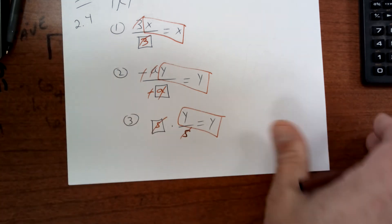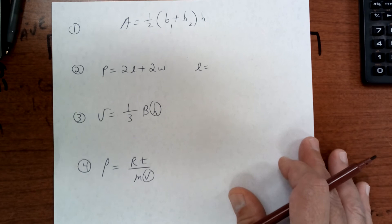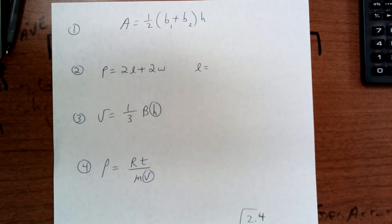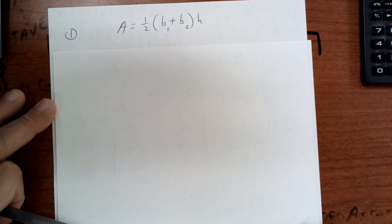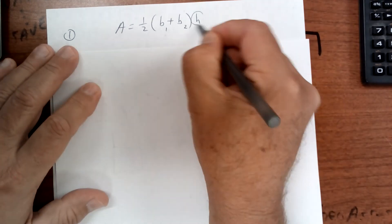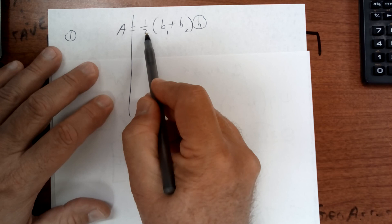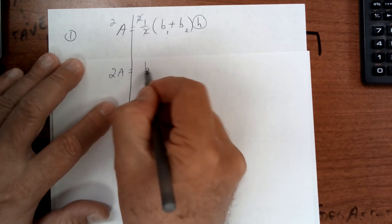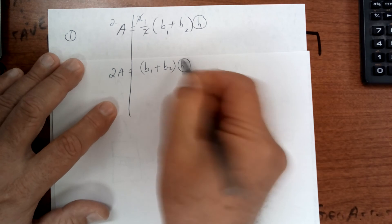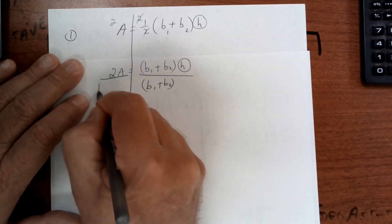This might be one of the most important things I teach you — it can also be the most challenging but it's also the most rewarding. We're trying to get h by itself — here is the h, so circle it. They'll tell you which variable to get by itself. Draw a line — you see how you're dividing by 2, so first I'd multiply by 2 to get rid of it: 2a equals (b1 plus b2) times h. Then divide everything by (b1 plus b2) and you're done.